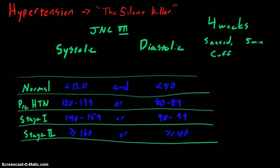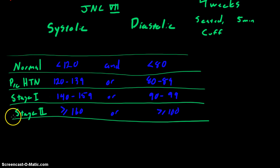So let's say that you have a patient, Fred, and Fred's in to see you. Last time he was here, he had elevated blood pressure. And today again, his blood pressure is the exact same — it's 119 over 82. And you did everything correctly: four weeks apart, seated for five minutes, and rested.